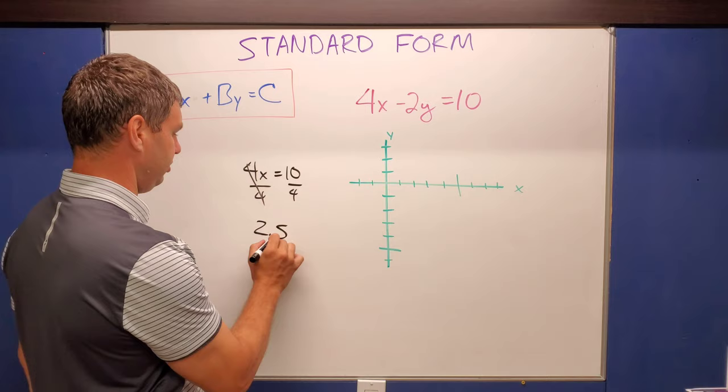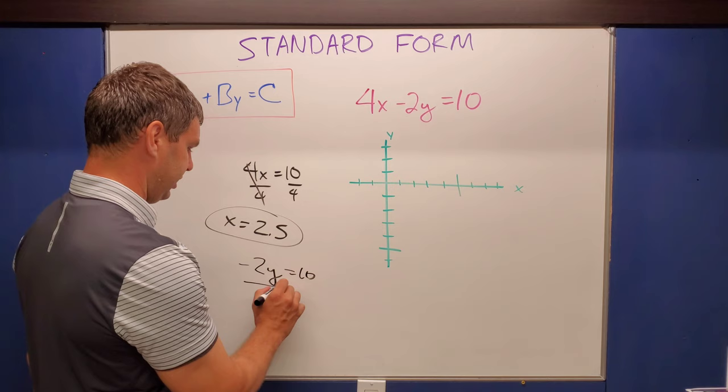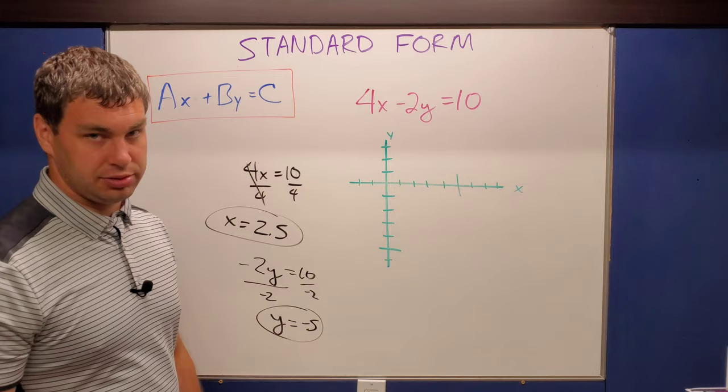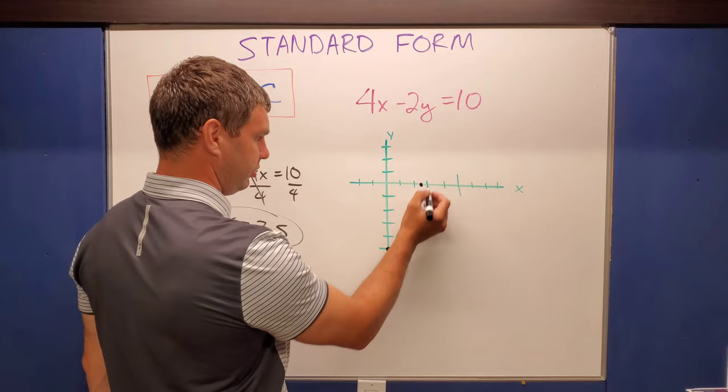And then if I do the same thing for the y's, cover up the x, negative two y equals 10 is the other one. This time it does work out a little bit better, divide by negative two, and y is gonna be negative five. So now if I plot those two, 2.5 for the x, one, two and a half. And then y is that negative five, one, two, three, four, five. Now if I go through those two points, that is the line that represents the graph of this equation.